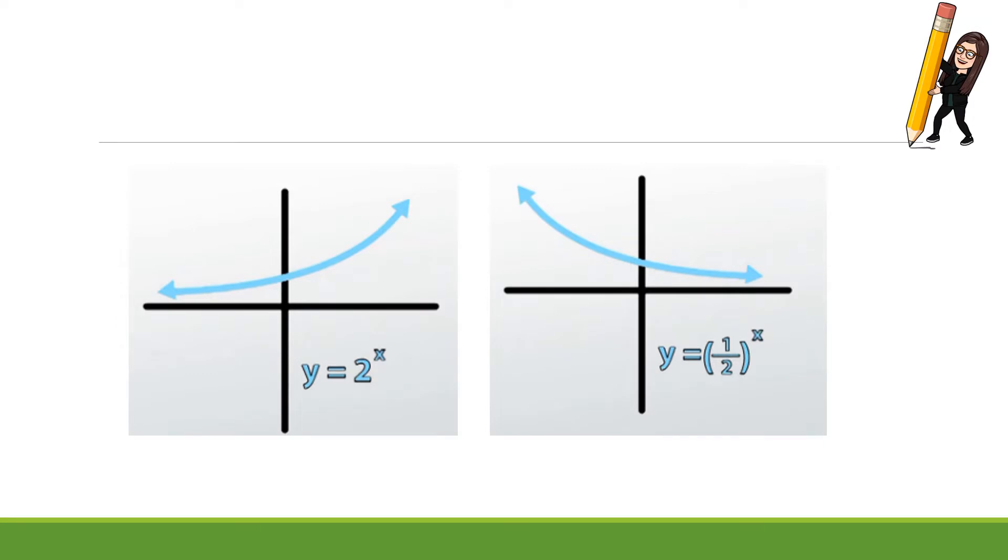A couple pictures. In this example, if you have it on your foldable, you'll notice that this b value is 2. 2 is greater than 1. So identify that this represents growth, which makes sense, right? I'm curving and going up. I'm increasing. Whereas this b value is 1 half. So that represents decay. Visually it makes sense, right? I'm going down as I trace the graph.